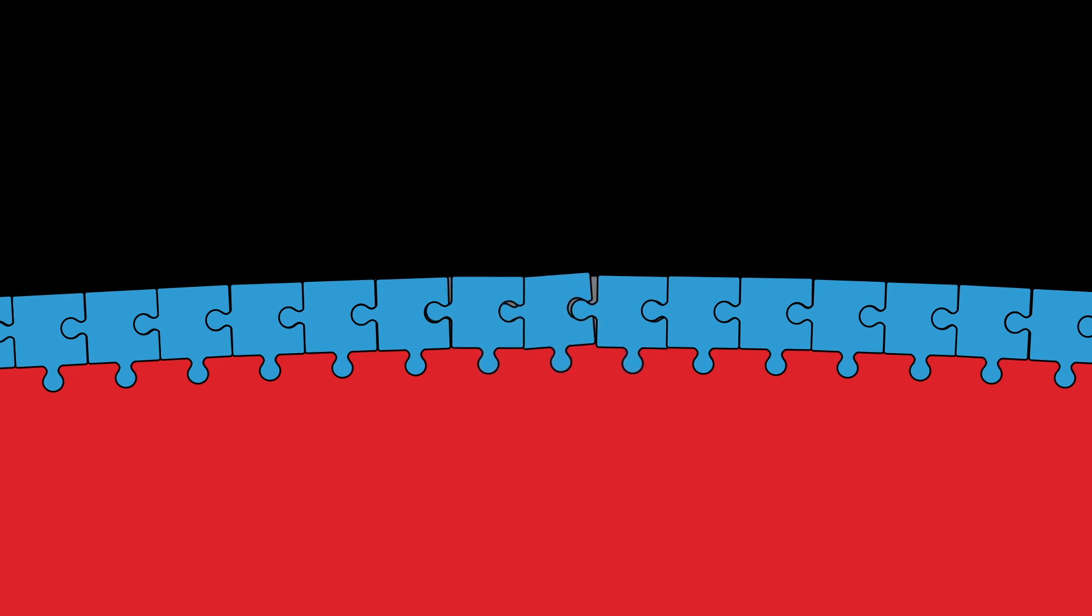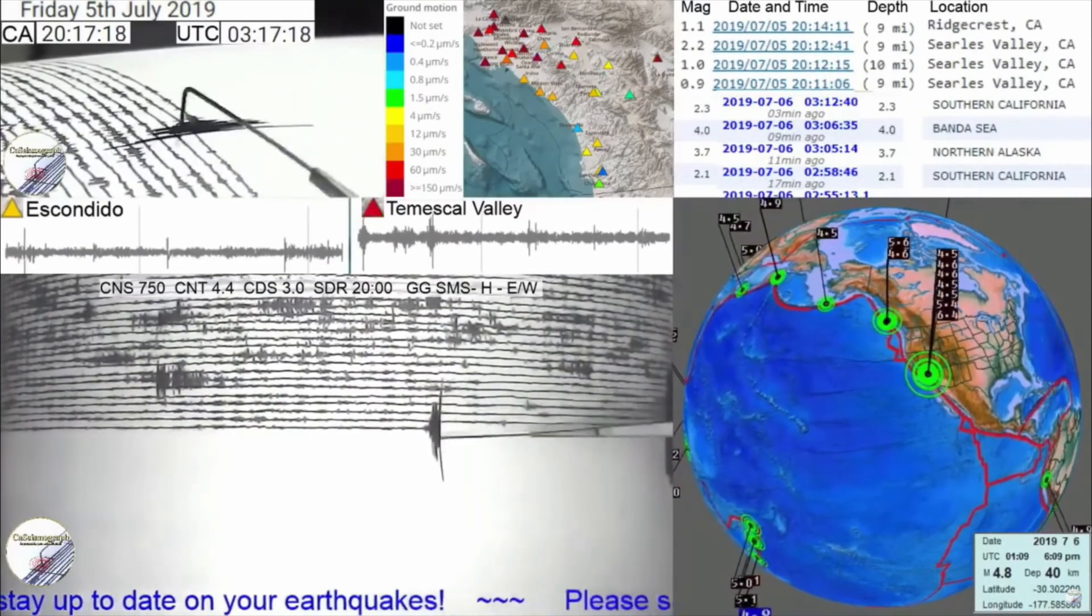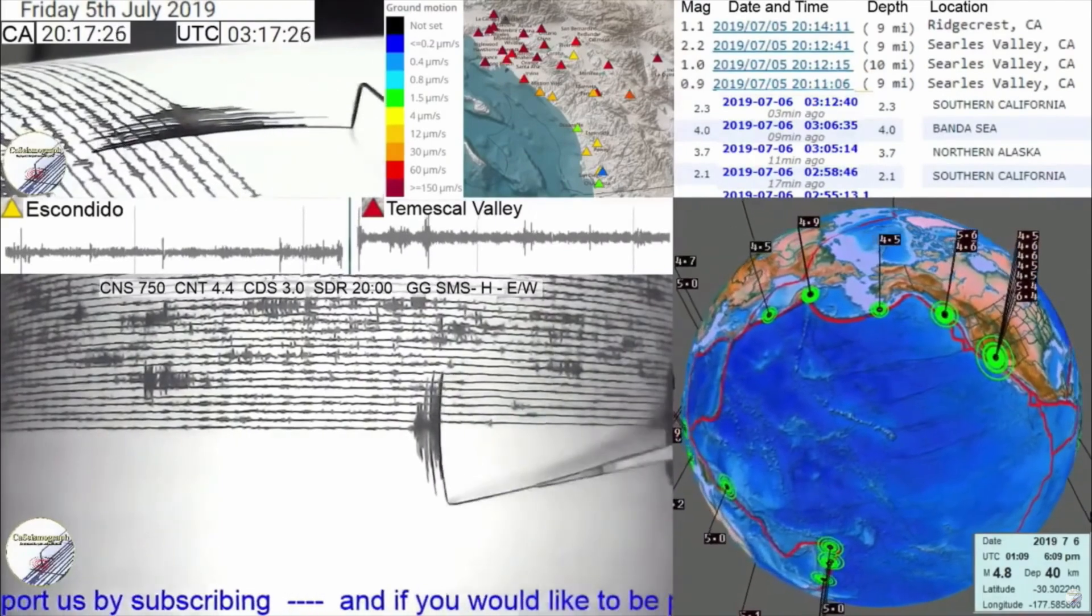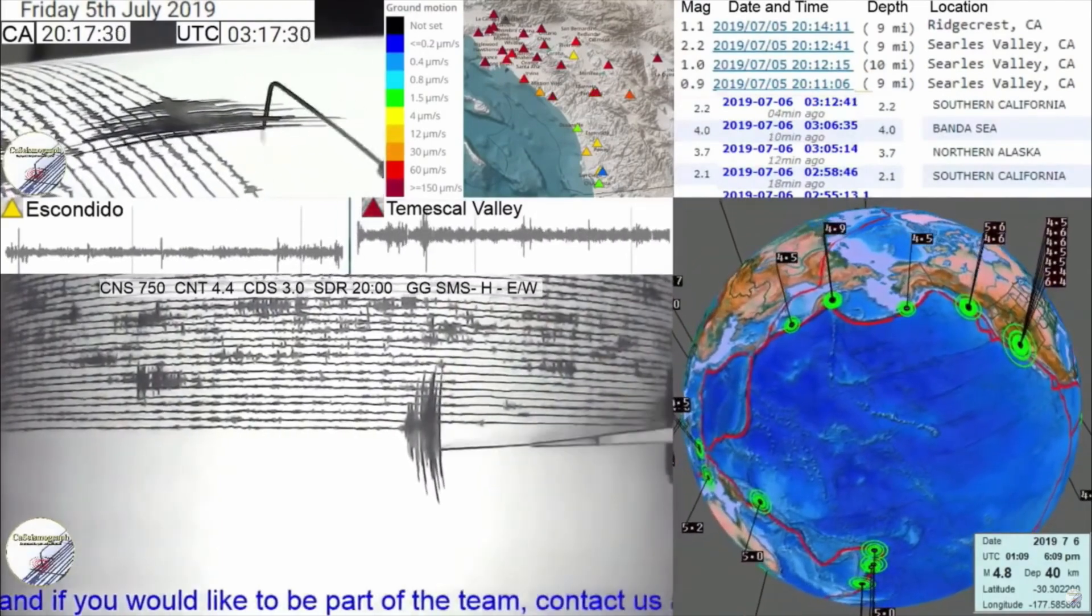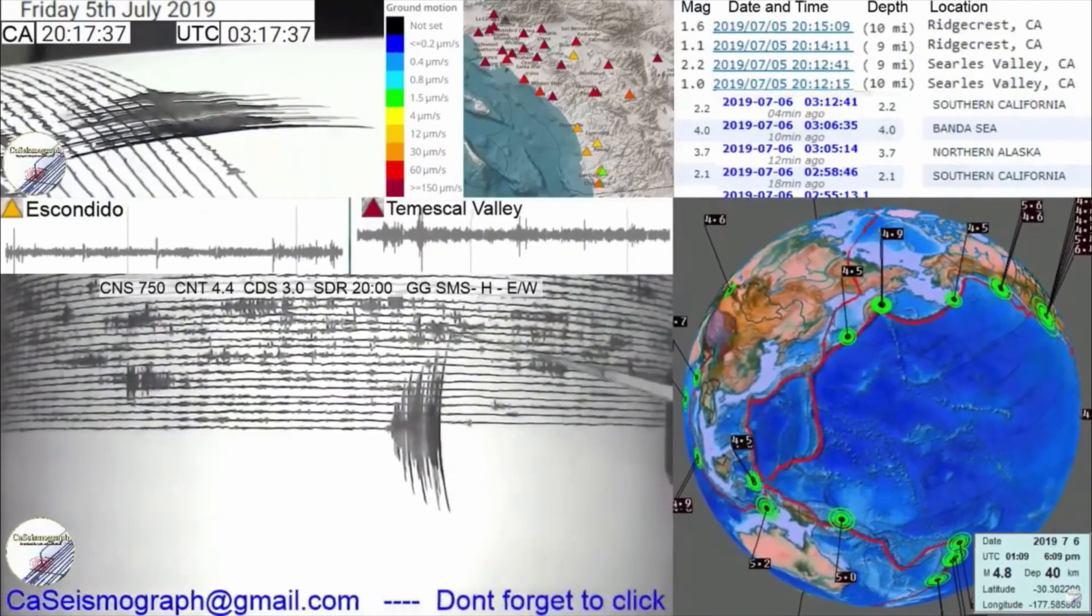Sometimes when large amounts of energy are released, tectonic plates grind together violently, resulting in phenomena known as earthquakes. Earthquakes send shock waves known as seismic waves throughout the planet. Scientists can detect the arrival and nature of these waves using instruments called seismometers. Like x-rays passing through your body, these seismic waves travel through the planet and are used by scientists to piece together an accurate picture of Earth's interior.